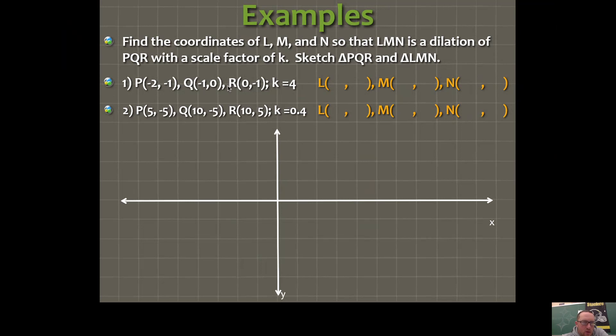So we have the ordered pairs for triangle PQR. I'll use green. We're going to go for point P, negative 2, negative 1. Q would be negative 1, 0. R would be 0, negative 1. So we've got this triangle. And I would label this, but if I do this for all four, it's going to get pretty messy. Let's see what it looks like. There's P, Q, and R. So you're going to plot that guy.